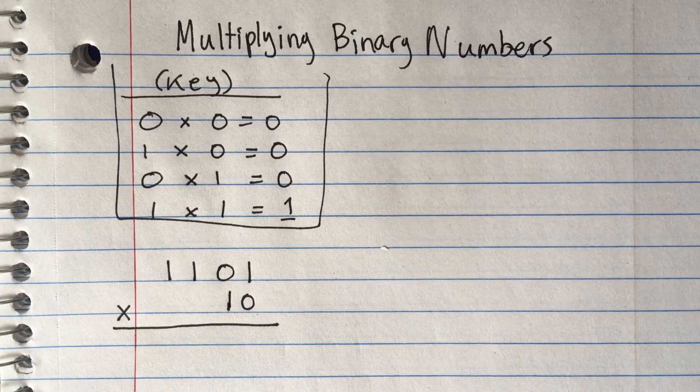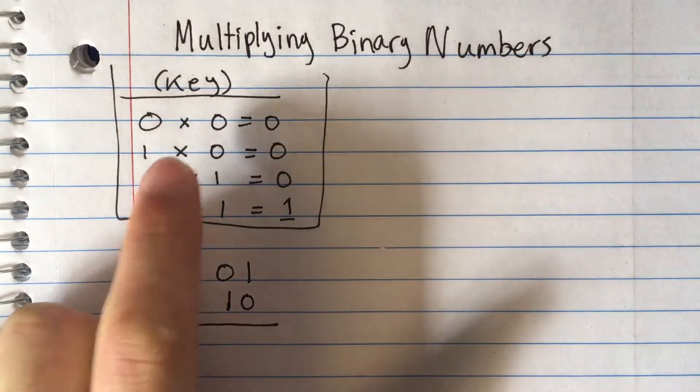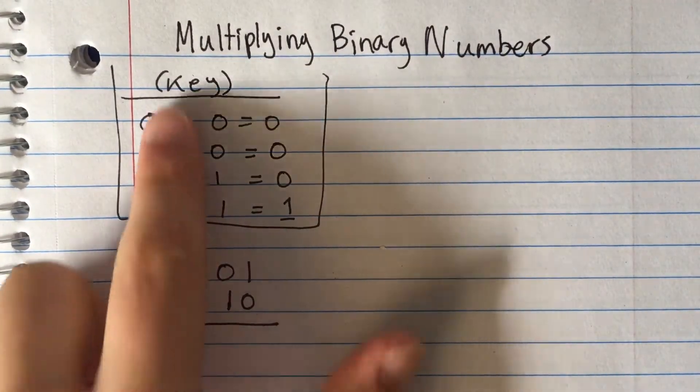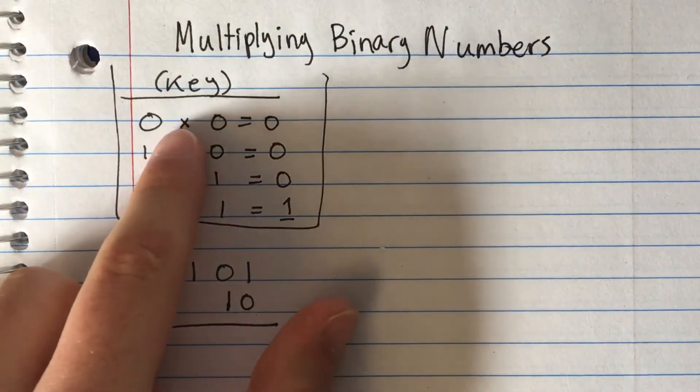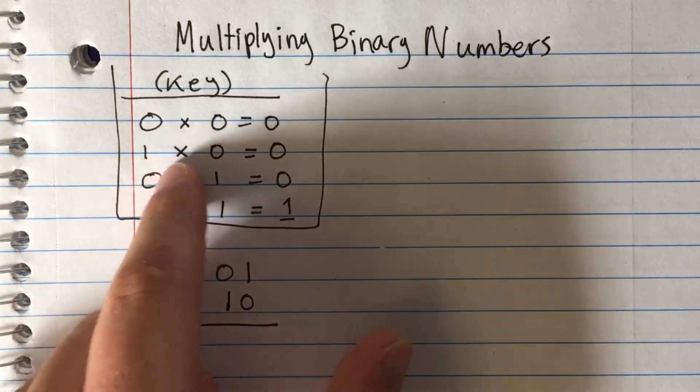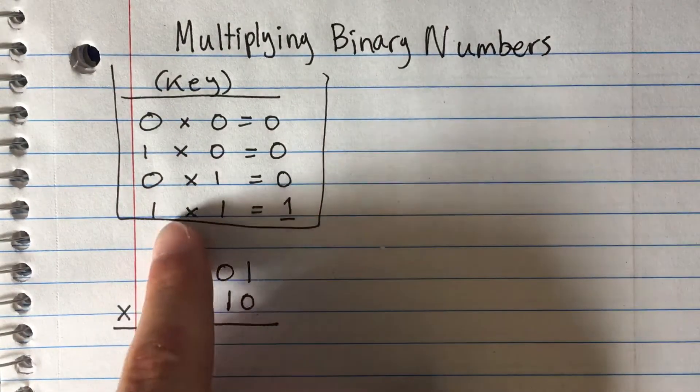In this video, I'm going to be multiplying binary numbers. I have the key listed right here—the only four rules you need to know: 0 times 0 equals 0, 1 times 0 equals 0, 0 times 1 equals 0, and 1 times 1 equals 1.